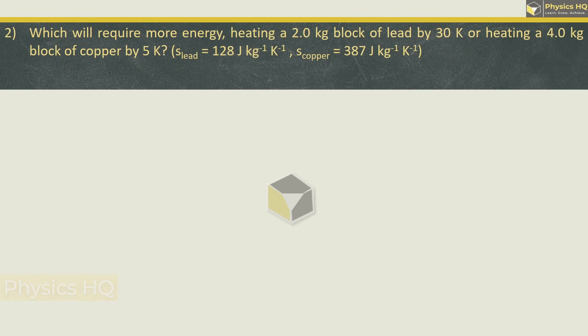Next, which will require more energy: heating a 2 kg block of lead by 30 Kelvin or heating a 4 kg block of copper by 5 Kelvin? The two specific heat capacities are given. Heat required is the simple formula: mass into specific heat capacity into change in temperature. So we are increasing the temperature by 30. Let us find out how much heat is required for lead.